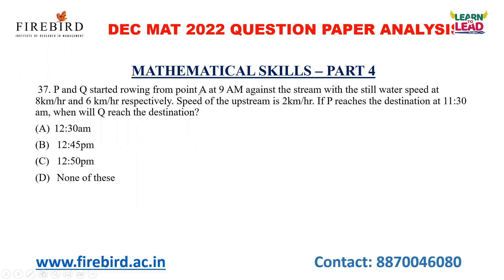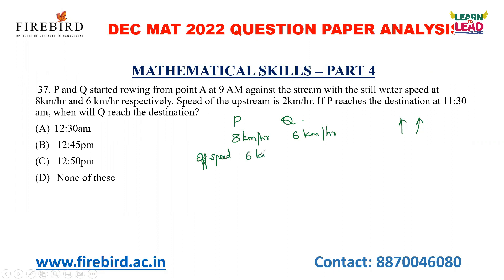P and Q started rowing from point A at 9 a.m. against the stream. The still water speed is 8 km/h and 6 km/h respectively. Both P and Q are moving upstream. The speed of the upstream current is 2 km/h. So the effective speed of both P and Q are 6 km/h and 4 km/h. You have to subtract the upstream speed from their still water speed to get their effective speed.